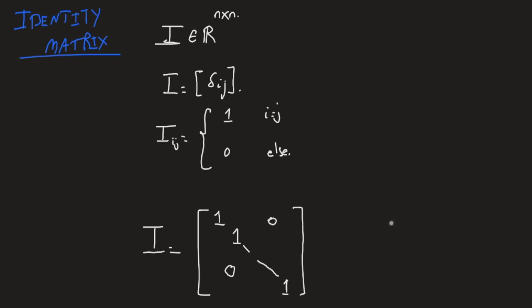This matrix is going to occur a lot in linear algebra, because the identity matrix is the equivalent of the number one in the real number system. If you grab I and multiply it by any matrix, it's going to yield that matrix, whether you multiply from the left or the right.